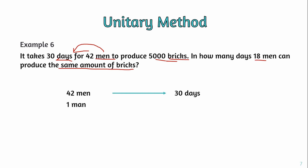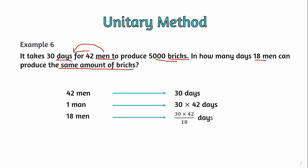So 30 times 42 days are needed for the original work. Since fewer men are working, we divide: 30 times 42 divided by 18 days. Simplifying, 18 divides into 42, giving 3 and 6, and 18 and 30 simplify to 5 and 6. So 5 times 42 equals 70 days. That is the number of days 18 men take to produce the same amount of bricks.